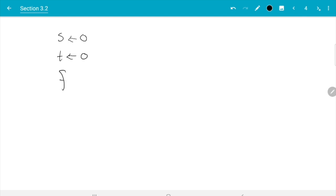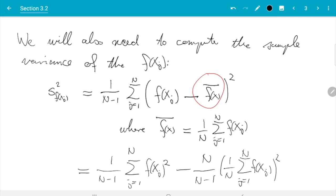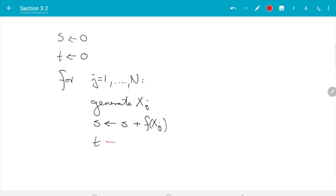Then for j from 1 to N we generate X_J, we compute f(X_J). Then we do s is replaced with s plus f(X_J), that's going to be the sum of the f(X_J) and then the average. And t will be used for the first term here, for this term. We need the sum of the squares of f(X_J). What we can do is t is the old t plus f(X_J)^2.